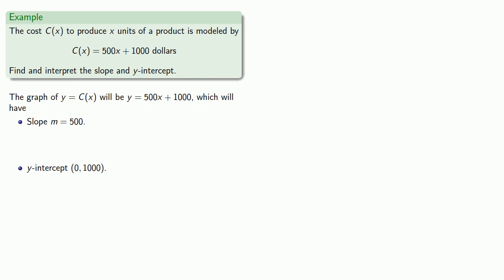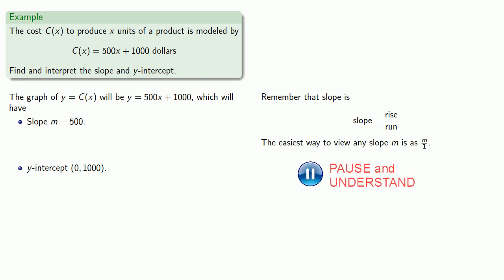What do they tell us? Well, remember that the slope is rise over run, and the easiest way to view any slope m is as m over 1. So our slope m is 500. So if m equals 500, which is to say 500 over 1, then we have the following.